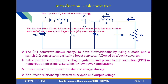The Ćuk converter is utilized for voltage regulation and power factor correction in numerous applications. It is suitable for low-power applications, uses capacitors for power transfer and energy storage, and has a nonlinear relationship between duty cycle and output voltage. Capacitor C1 is used to transfer energy. The two inductors L1 and L2 are used to convert the input voltage Vs and the output voltage Vy into current sources.